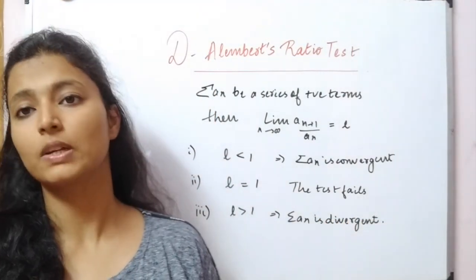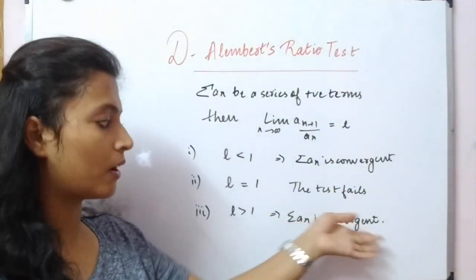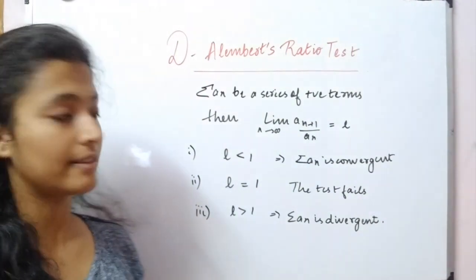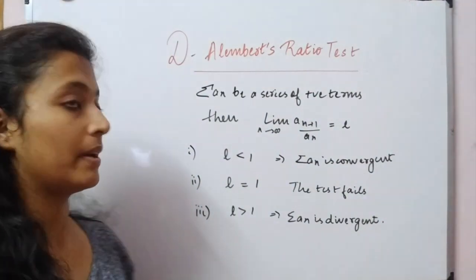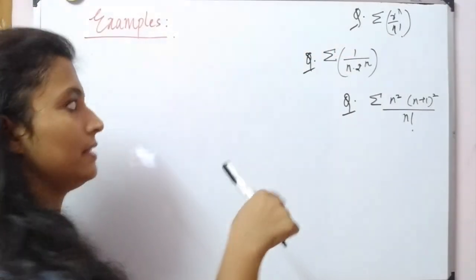So through this test we can check convergence, and in case it's not convergent we can be sure about divergence as well. A few examples will help us understand this better. It is a very important test, so you need to remember it. Let's see the following three examples.